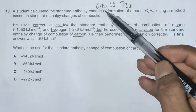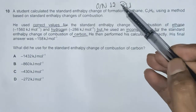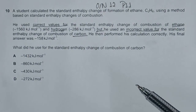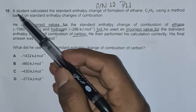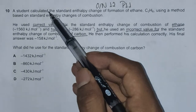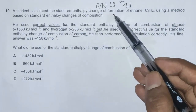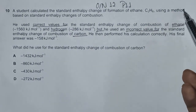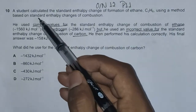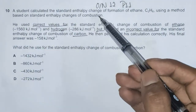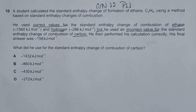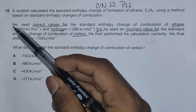Hello everyone, this is a November 12 question paper, question number 10, concerned with the chapter on enthalpy changes. The question reads: a student calculated the standard enthalpy change of formation of ethane C2H6 using a method based on standard enthalpy changes of combustion. This means we need to draw an enthalpy cycle first.